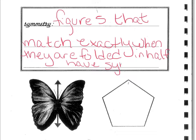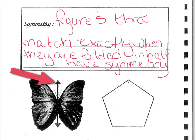And we call the line that you fold them over the line of symmetry. I'm going to draw a little arrow here to point to it. That is our line of symmetry.